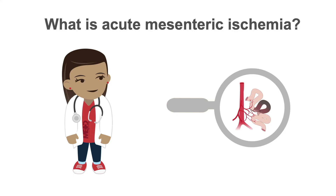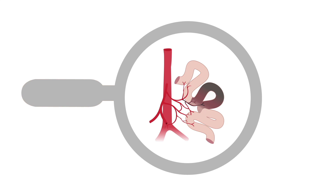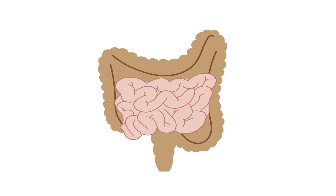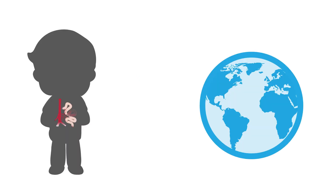In this Bed Mastery lesson, we will discuss mesenteric ischemia. Intestinal or mesenteric ischemia can affect the small or large intestine and can be caused by any process that reduces intestinal blood flow. Thromboembolic occlusion of a superior mesenteric artery is the most common cause of acute mesenteric ischemia. The incidence of mesenteric ischemia is 8.6 per 100,000 per year.